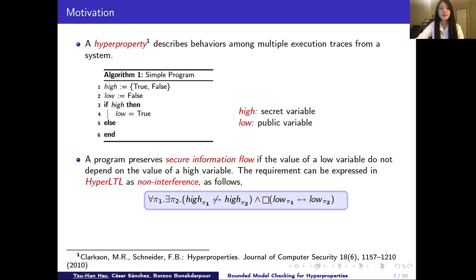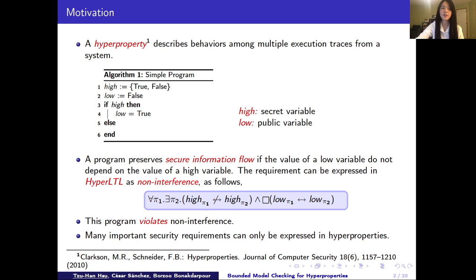This requirement can be expressed as the security property non-interference using hyperLTL formula which is for all traces there exists another trace such that they have different value on high variable but always have the same value on their low variables. In this example we can observe that because a low variable is changing the value from false to true based on the value of high variable so they are not independent from each other thus we say this program violates non-interference.